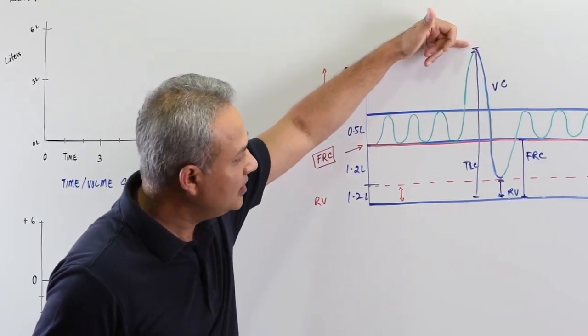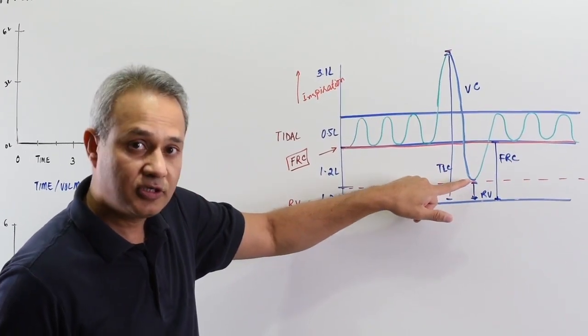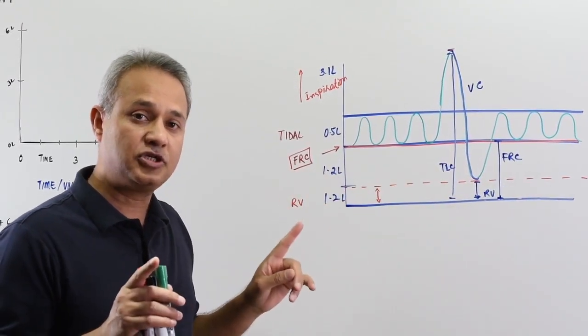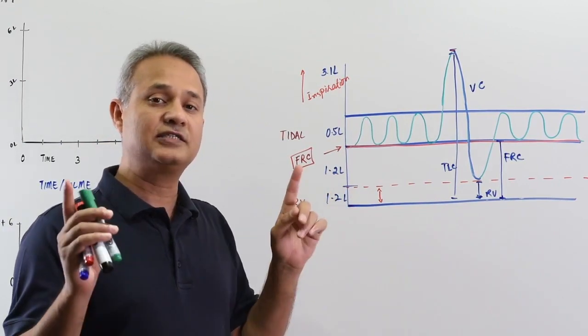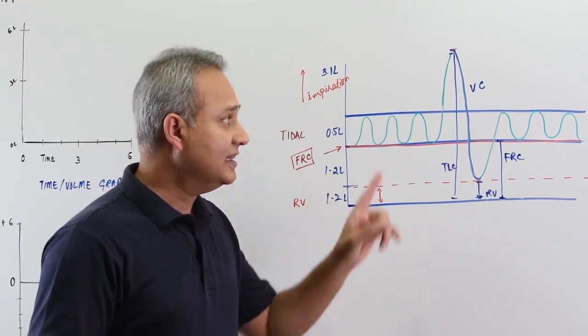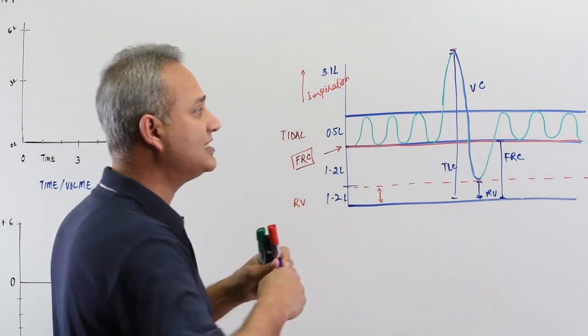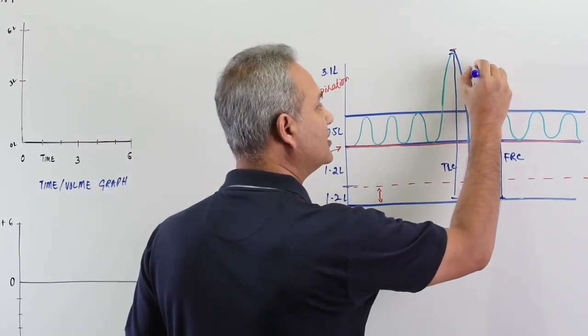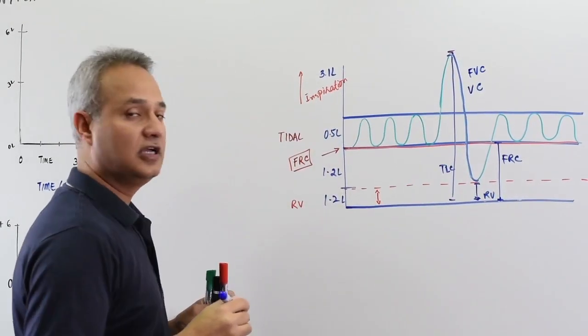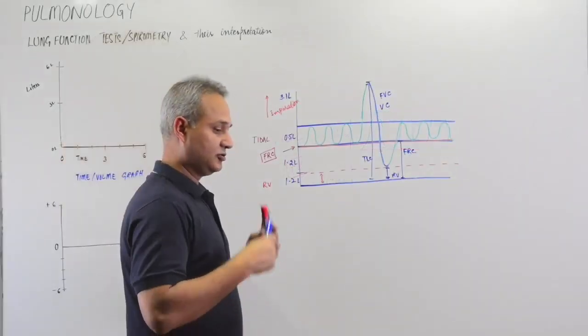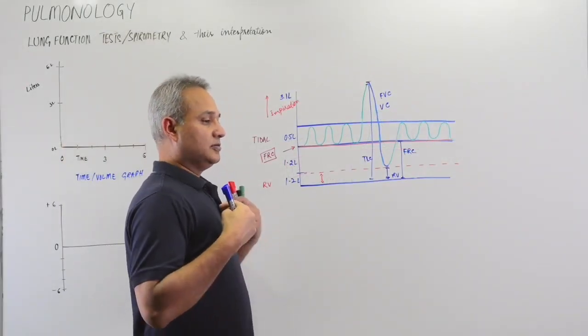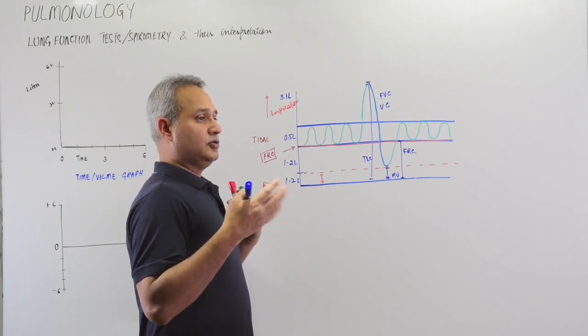However, if you ask the patient to do this in a forceful way, if you ask the patient to do it rapidly, then this VC is called FVC - forced vital capacity. So this is the vital capacity inspiration done, and now I'm going to exhale.